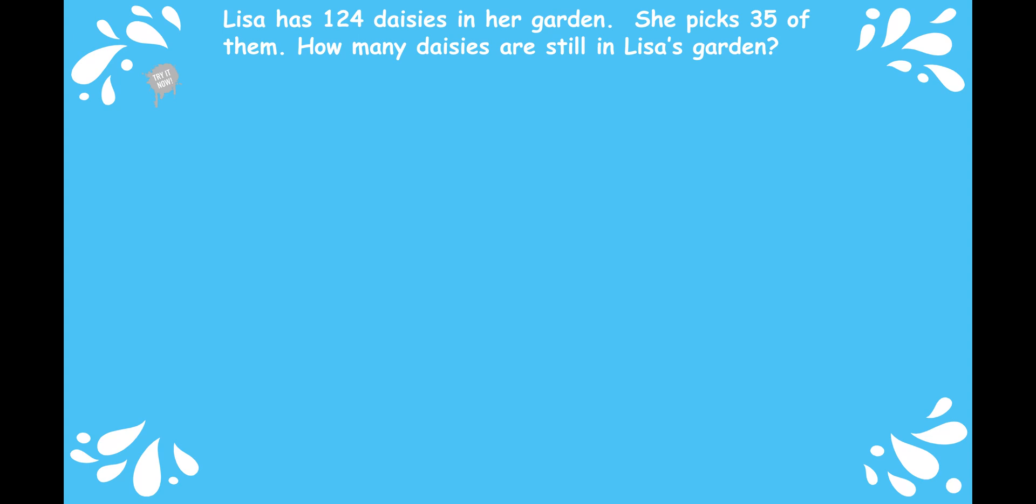All right. Well, hopefully what you did sounded something like this. Lisa has 124 daisies in her garden. She picks 35 of them. How many daisies are still in Lisa's garden? Well, we know how many daisies Lisa has in all. And we know that she picks part of the flowers. And we need to figure out the other part. So yes, we subtract.